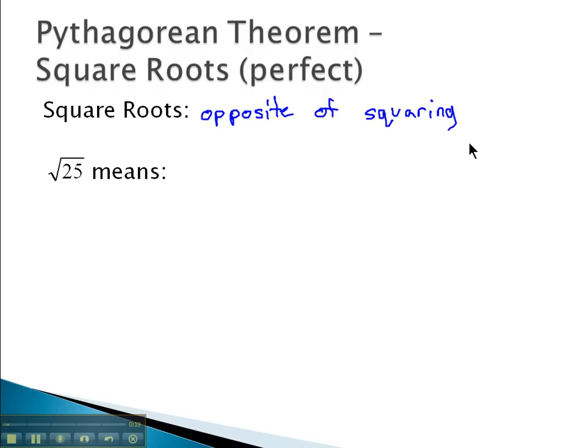You might think about it as unsquaring a number. And we show square roots with this little symbol here. It looks like a division sign with a little tail at the front, and we read that as the square root of 25.